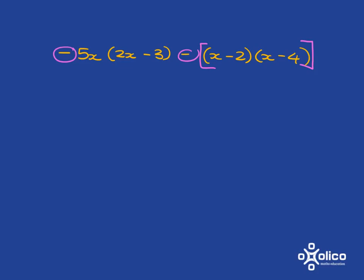All right. So hopefully the first bit was quite easy. You just need to multiply in. Minus 5x times 2x is minus 10x squared. Minus 5x times minus 3 gives me plus 15x.